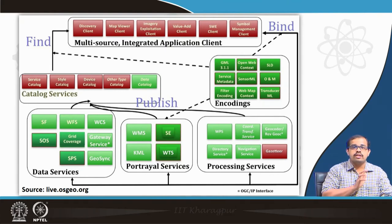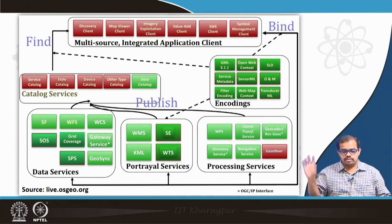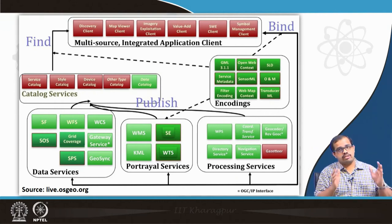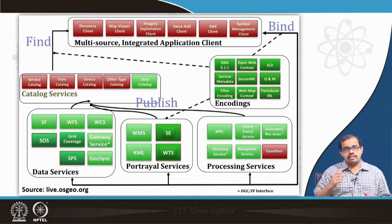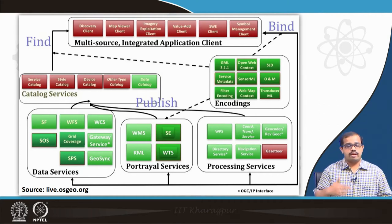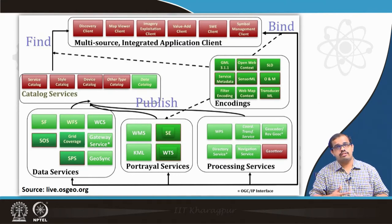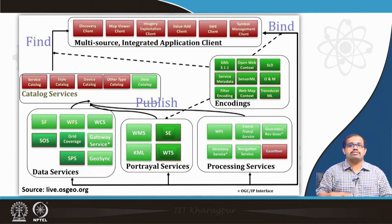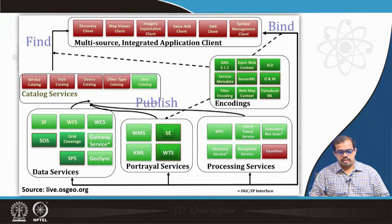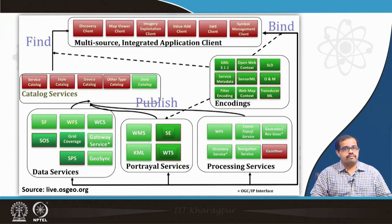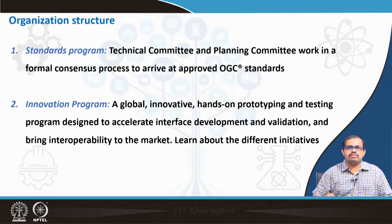From live.ogc.org, you can see the entire scheme of how this works. You create a data catalog, a style catalog, and a service catalog. A client then looks at how to represent that particular data on the web service. First, select a data service — either WCS, WFS, or SOS. Then determine whether you need data services, portrayal services (WMS), or processing services (WPS). Once the catalog is created, select a client — map viewer, imagery exploration, value-added, or SLD client. Then bind through encodings such as GML, service metadata, filtering encoding, or web map content.